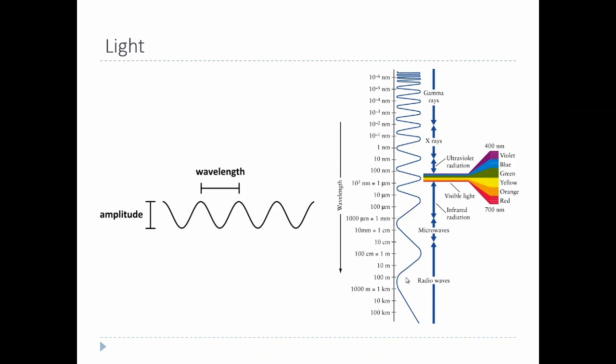Radio waves can be tens or hundreds of kilometers long in wavelength. At the other end you have very high energy things like gamma rays, which have fractions of nanometers in wavelength. Big range, and we can only see a teeny tiny slice of it.